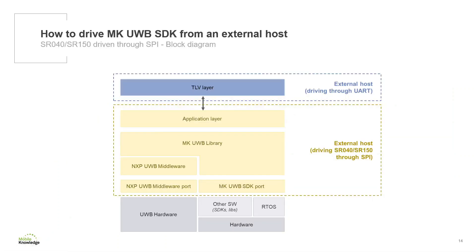Compared to the previous block diagram, Scenario 2 runs the MKUltraWideBand SDK and MKUltraWideBand library on the external host that is driving the SR40 or SR150 through SPI. That is, the functionalities that were run on the QN1990 before are now run on the external host. Moreover, a second external host can drive it too through the TLB layer.